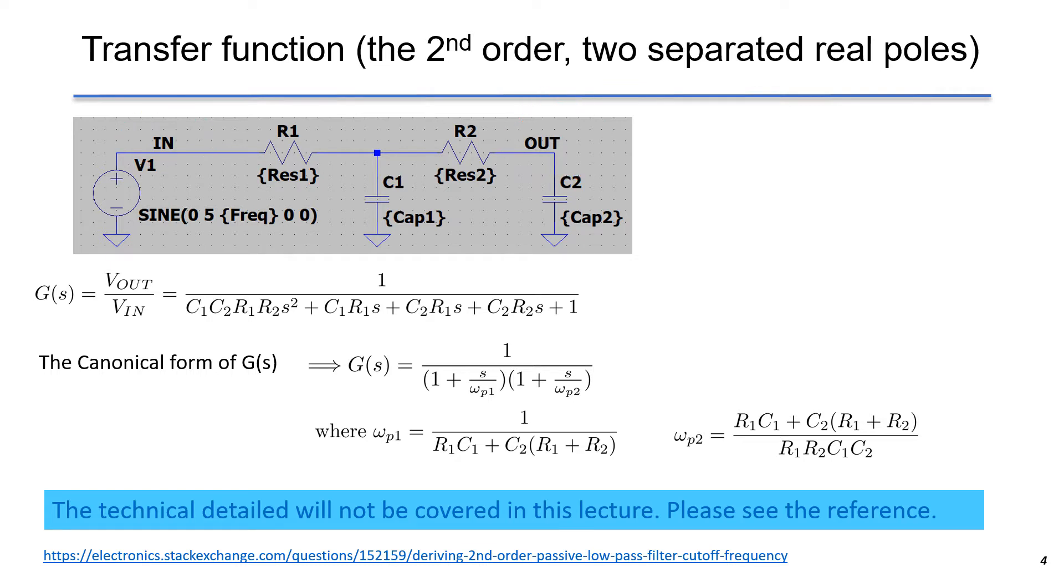In this course, I will not go through the details about the algebra. The result of G(s) is shown here. Also, you can put the result in a canonical form, defined as G of s equals to 1 over (1 plus s over omega_p1) times (1 plus s over omega_p2). This is the canonical form of a transfer function with two poles.